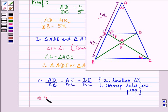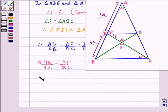This implies 4K upon 9K, because AB is 4K plus 5K that is 9K, is equal to DE upon BC. This implies that DE upon BC is equal to 4 upon 9 and we call this equation 1.